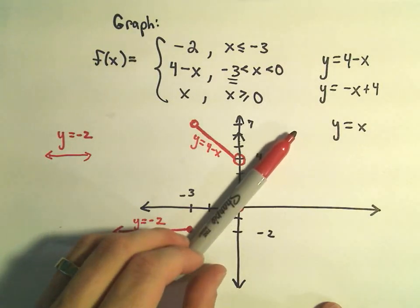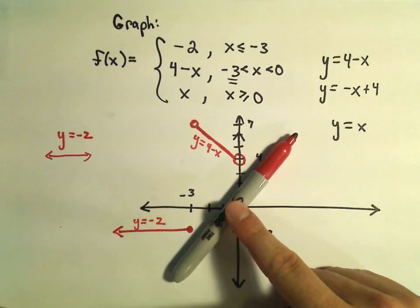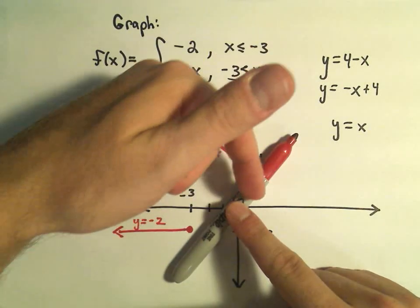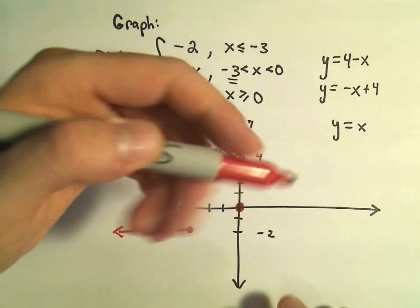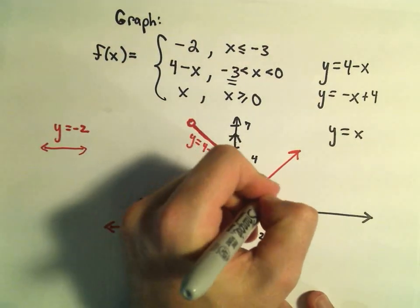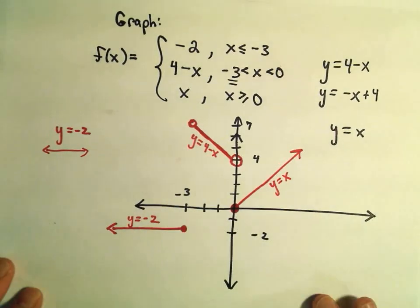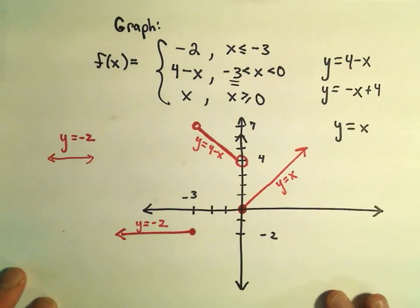But again, it only looks like this line y equals x for x values greater than or equal to 0. So to me, that's only the right portion of the graph. So now I'll just make it extend on forever and ever and ever. And there's our line y equals x. And hey, now we're in business. We've got our nice piecewise defined function.